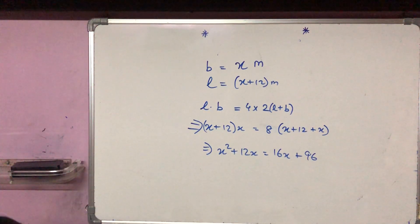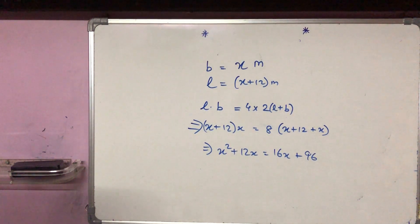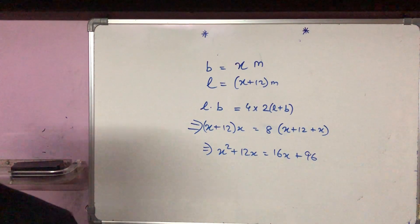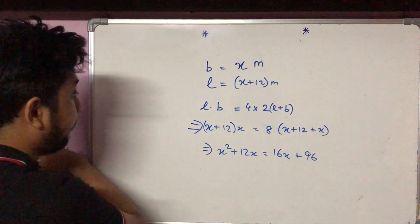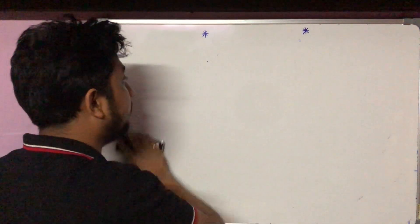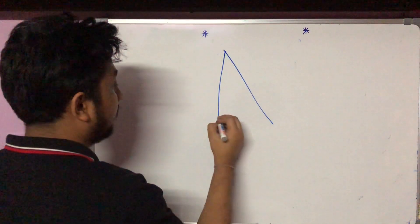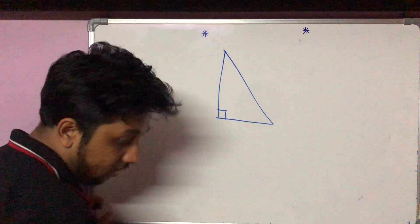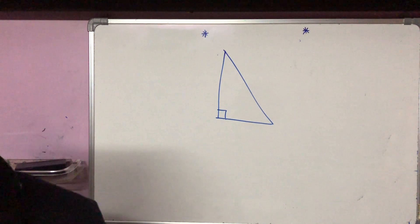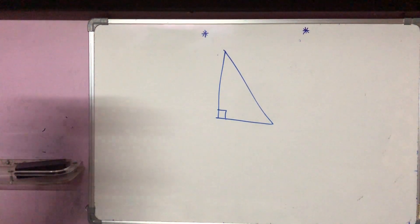Next question, question number 20 of chapter 10: the hypotenuse of a right angle triangle is 1 meter less than twice the shortest side.